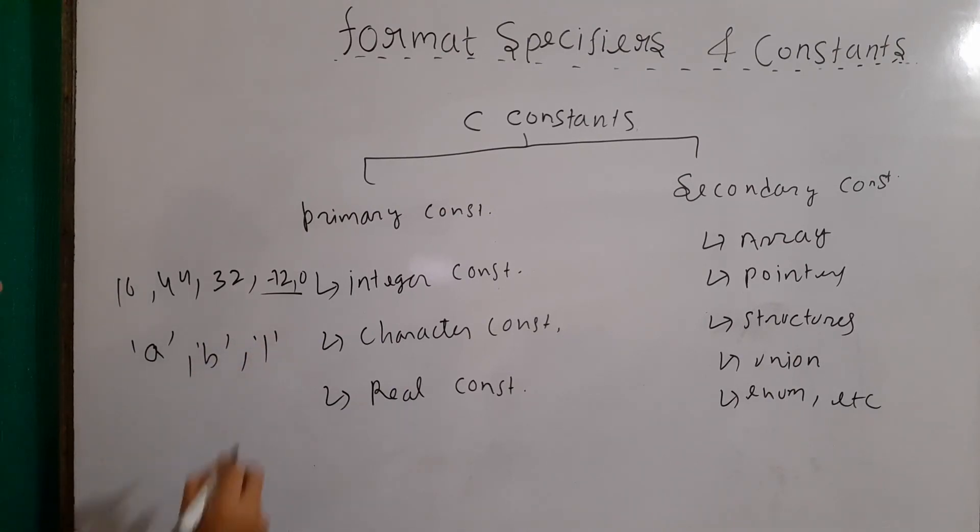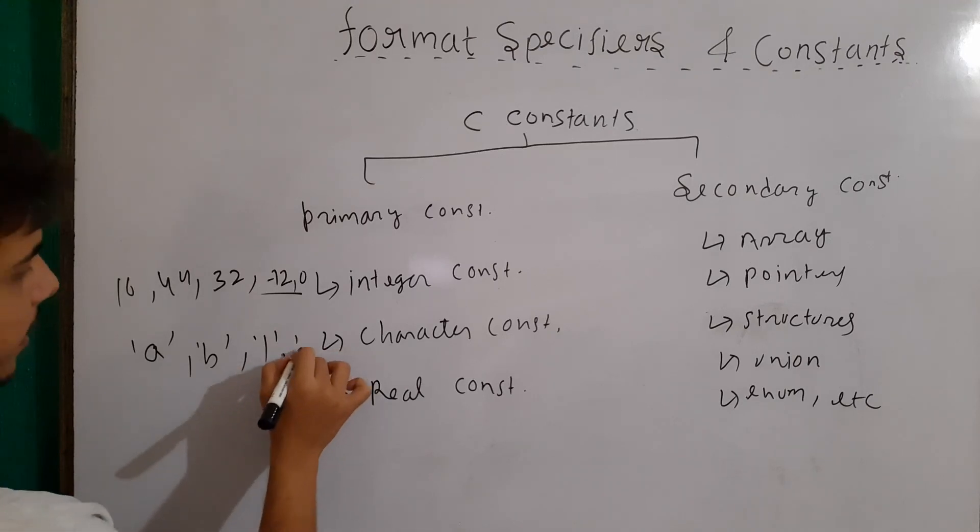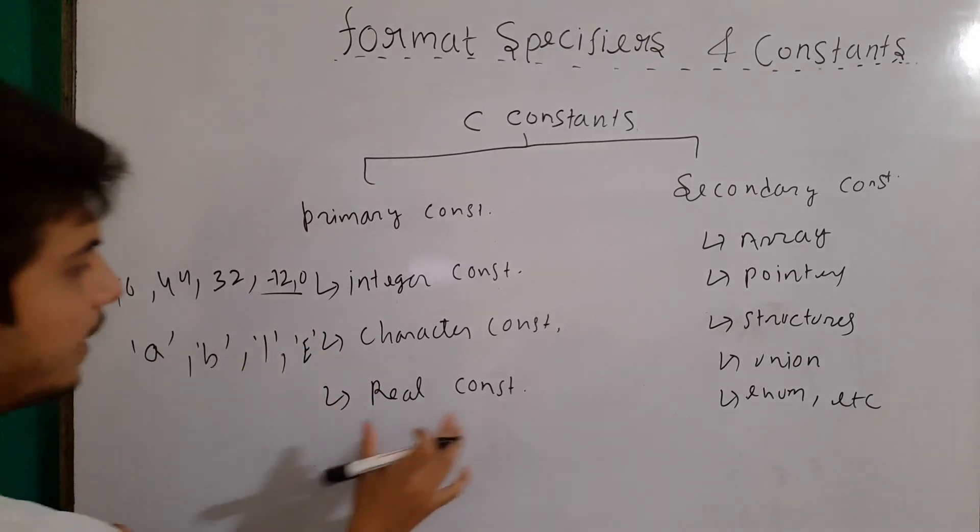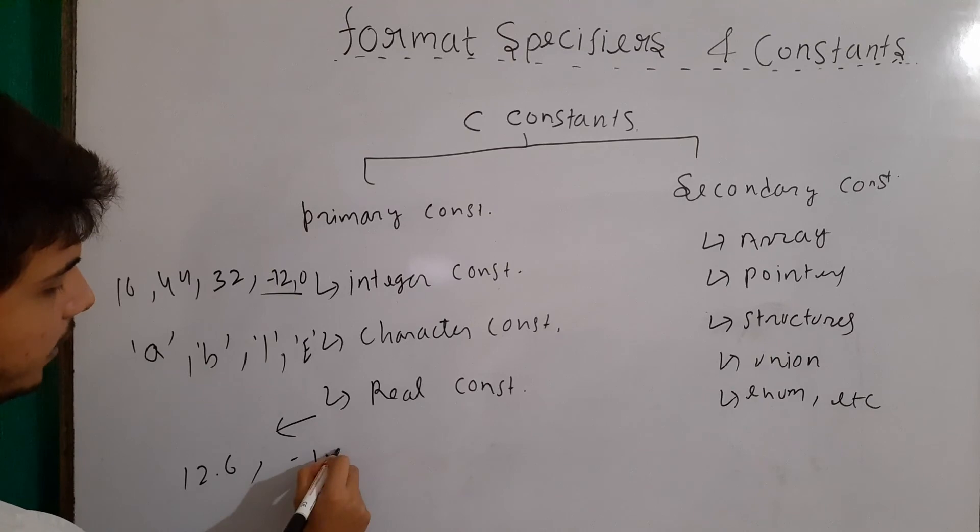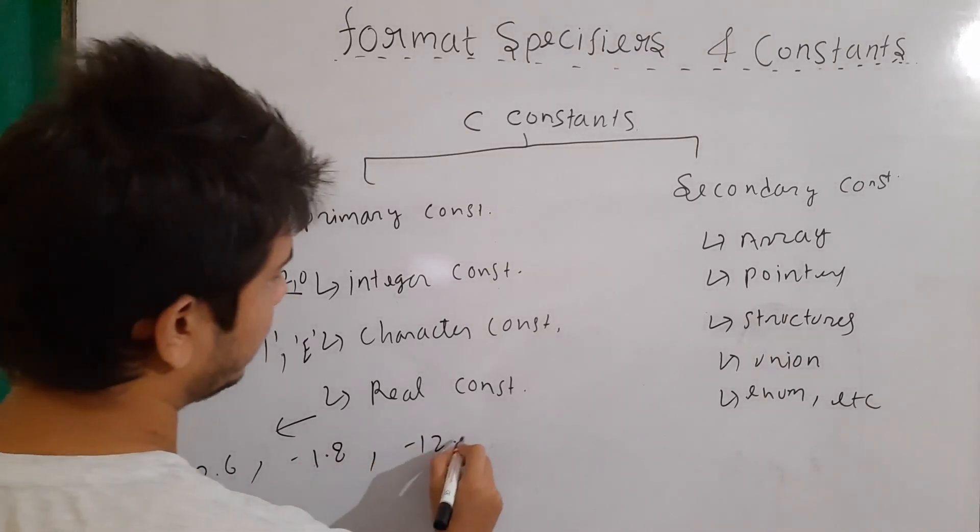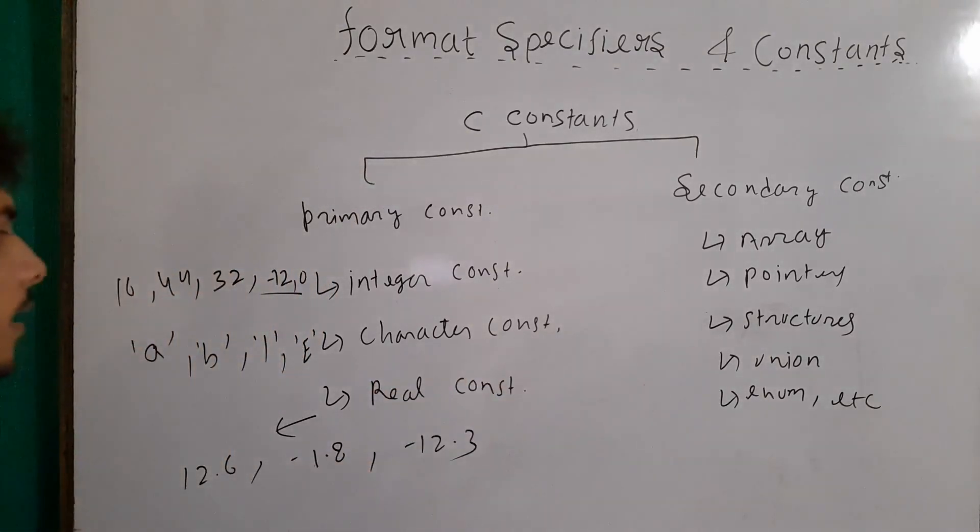And then let's say capital E. And in real constant, we have the decimal values. For example, 12.6, then minus 1.8, then 12.3. So these are the real constants here.